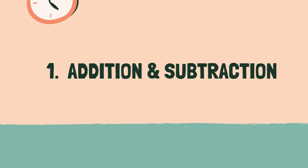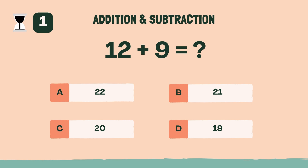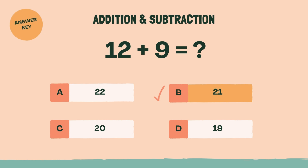Category 1: Addition and Subtraction. Three, two, one, go. What is 12 plus 9? B, 21.